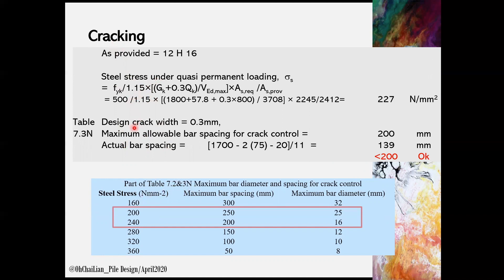Once the steel stress is obtained, and based on design crack width of 0.3mm, we can determine the maximum bar spacing and maximum bar diameter using interpolation method. We need to provide and make sure the actual bar spacing is less than the allowable. Actual bar spacing can be calculated with total width minus the cover at 2 sides minus 1 bar size and divided by the number of spacings. In this case, it's 11. Here we have provided bar size and spacing which are lesser than the allowable.